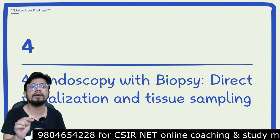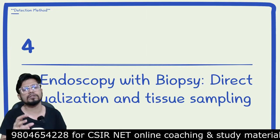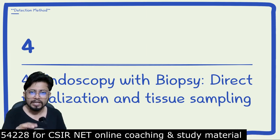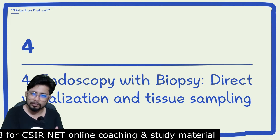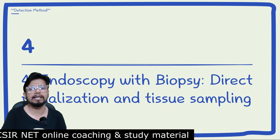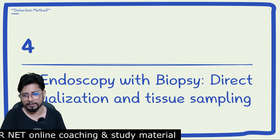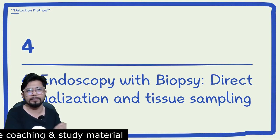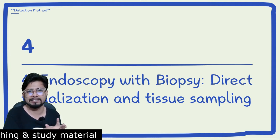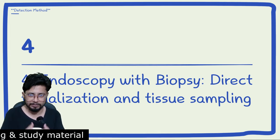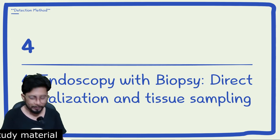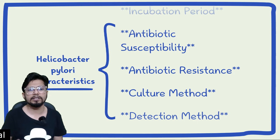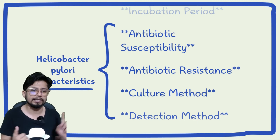The fourth detection method is endoscopy with biopsy, which allows direct visualization of the inflamed or necrotic areas of the stomach lining where Helicobacter pylori colonizes. Tissue samples can be taken and direct staining can be performed to reveal the presence of Helicobacter pylori — making it a very good confirmatory step.